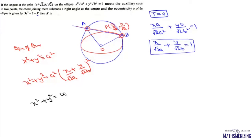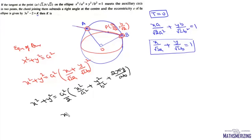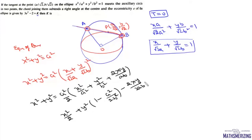We write x² + y² = a² multiplied by [x/(√2a) + y/(√2b)]². Expanding, this gives x² + y² = a² times [x²/a² + y²/b² + 2xy/(ab)]. Simplifying, the equation becomes x²(1 - 1/2) + y²(1 - a²/(2b²)) - 2xy·a/(2ab)·a² = 0.